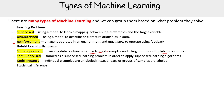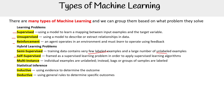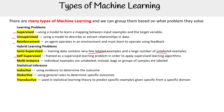We have statistical inference. Here we have inductive, deductive, and transductive. Inductive uses evidence to determine the outcome. Deductive uses general rules to determine specific outcomes. And transductive is used to predict specific examples given specific things from a specific domain.